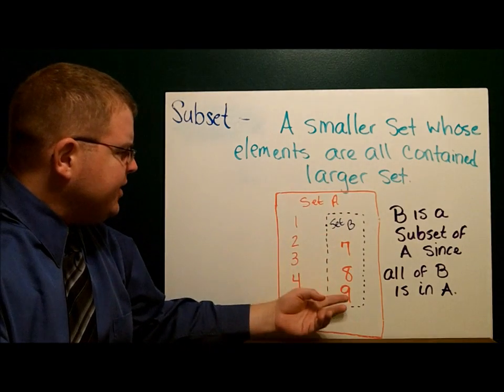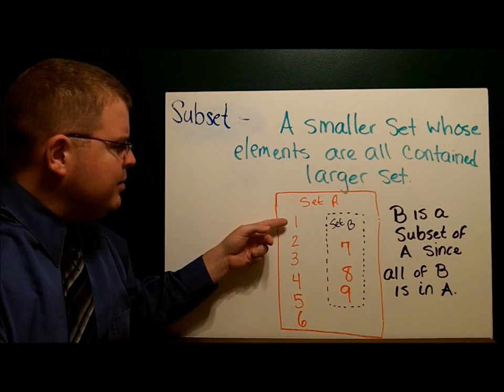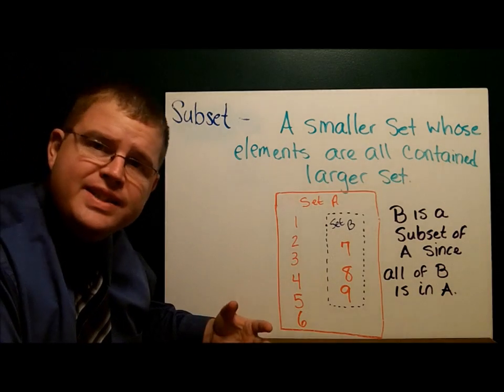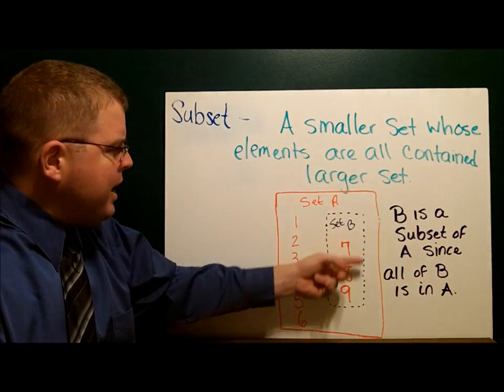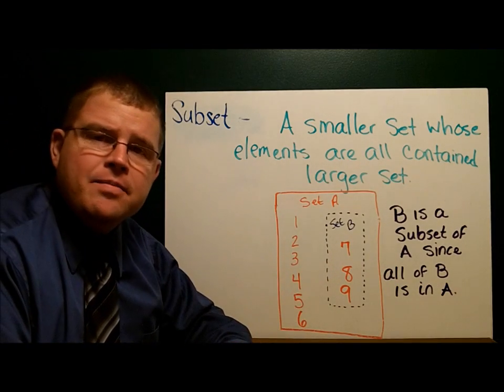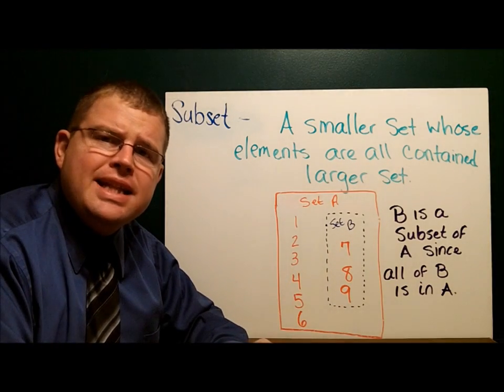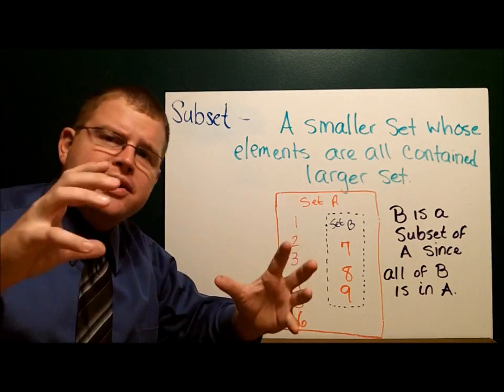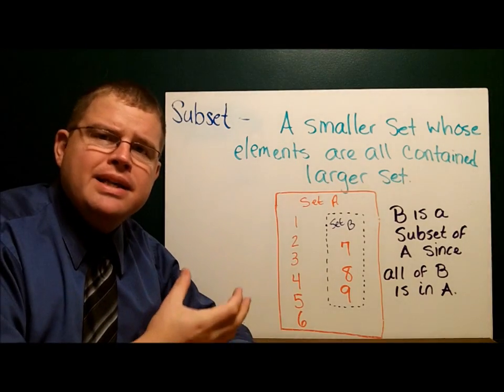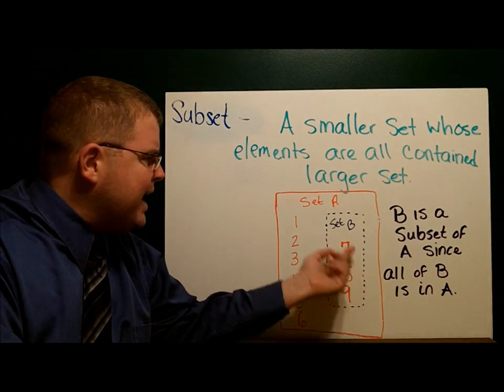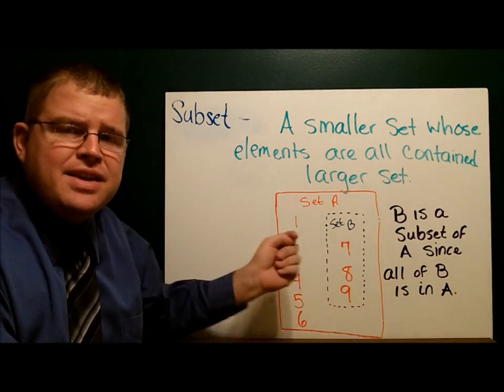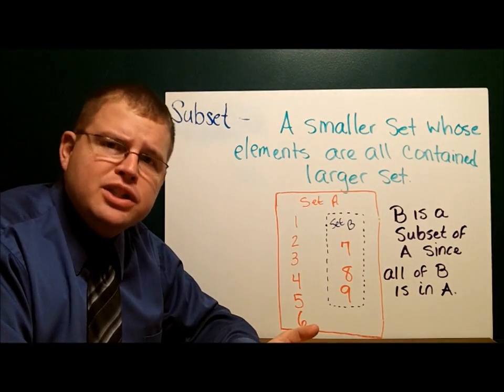Here's a picture. Set A is in red. It's the numbers 1, 2, 3, 4, 5, 6, 7, 8, and 9. Set B is right here: 7, 8, and 9. Because everything that's in B is in the bigger set, we say that B is a subset of A. The smaller set is called the subset, and the big set that has everything in it is called the superset.